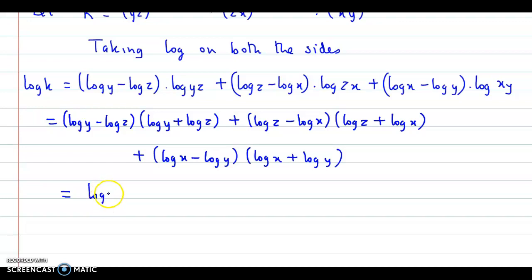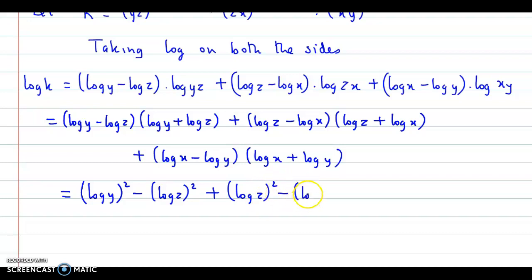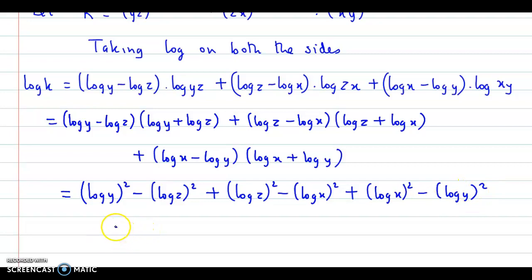Applying a minus b into a plus b equals a squared minus b squared: we get log y squared minus log z squared, plus log z squared minus log x squared, plus log x squared minus log y squared. Observing, log y squared and minus log y squared cancel out, and similarly the log z terms cancel out — they are opposite terms.